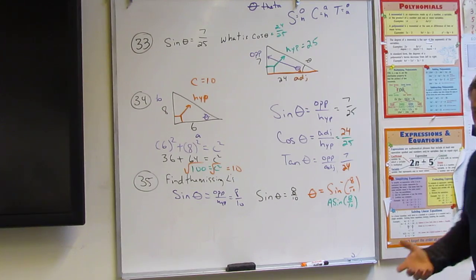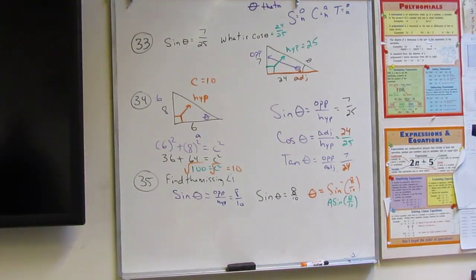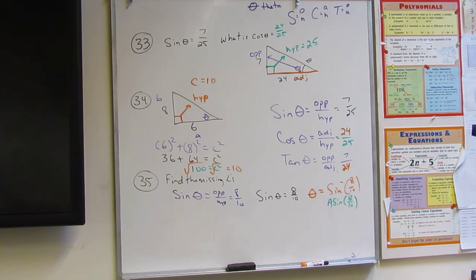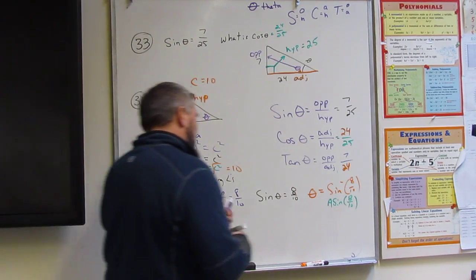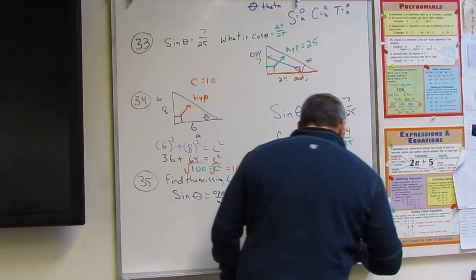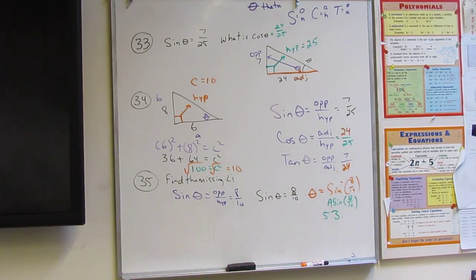But then all I do is I grab a calculator and I go, calculator, can you calculate eight divided by ten? And it says sure, that's eight tenths. And I say, calculator, can you take that and I'm going to shift you on the sine, instead of pushing sine, I'm going to push second sine, and then answer. What's up? What did I say was 52? I was wrong. 53 point what is it? One three.